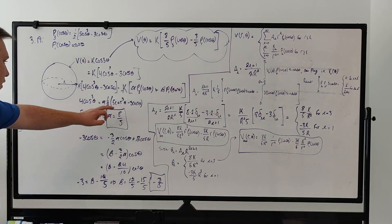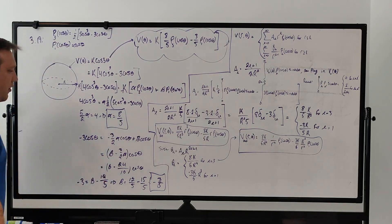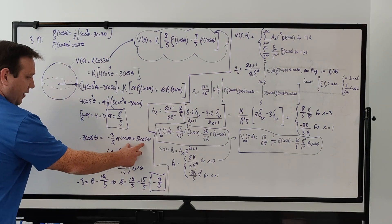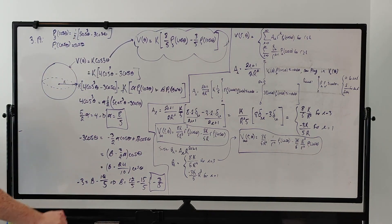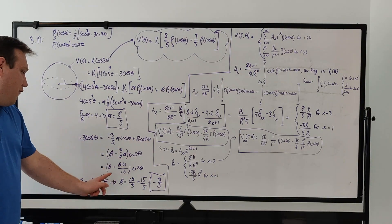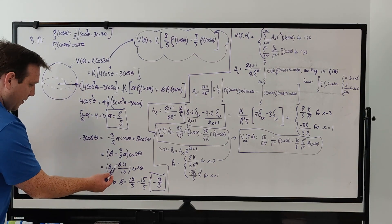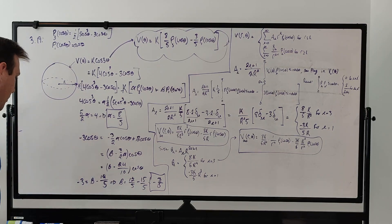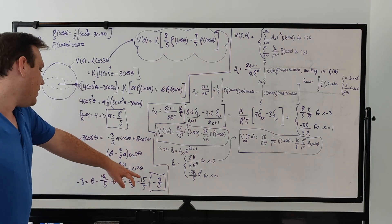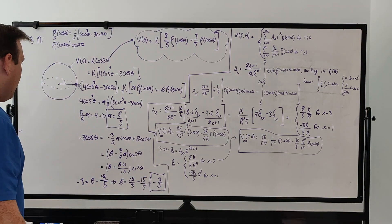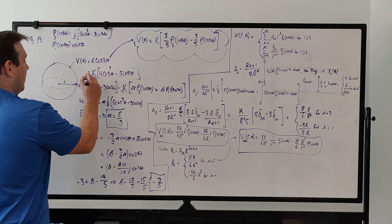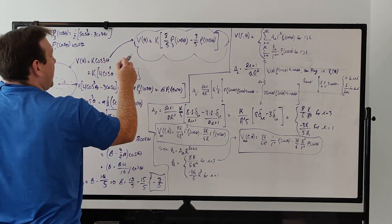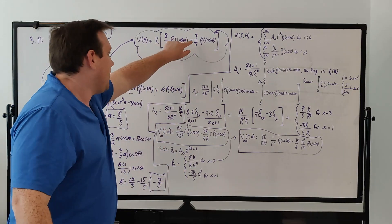For the second term, we want negative 3 cosine theta to equal negative 3/2 · alpha · cosine theta plus beta · cosine theta. We already know alpha is 8/5. Rearranging, beta minus 3/2 · alpha equals negative 3. Plugging in alpha: beta minus 12/5 equals negative 3. Solving gives beta equals negative 3/5. So with alpha = 8/5 and beta = -3/5, our potential function expressed in terms of Legendre polynomials is (8/5)·P₃ minus (3/5)·P₁, multiplied by k.